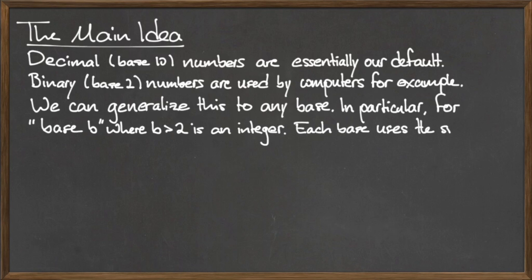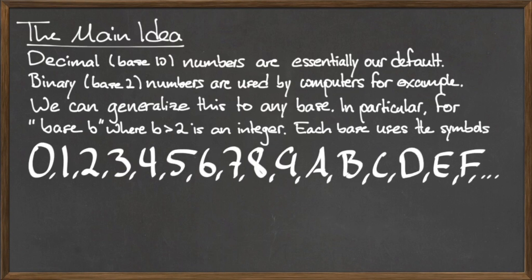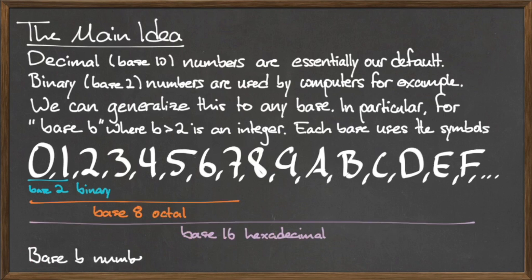Each base uses a certain number of symbols. For example, the decimal system, or base 10 system, uses the 10 digits 0 through 9. The binary system uses the digits 0 and 1. The base 8 system, also known as octal, uses the 8 symbols 0 through 7.